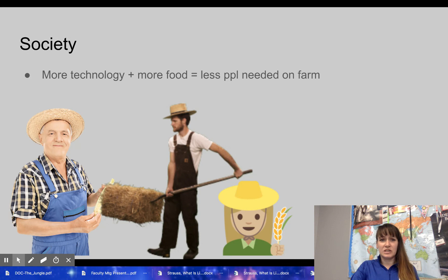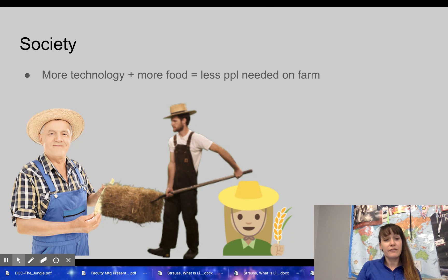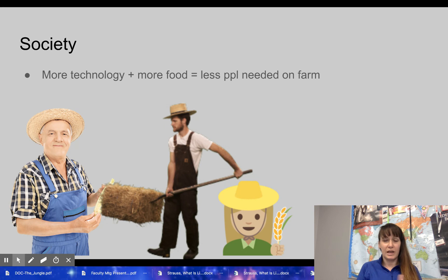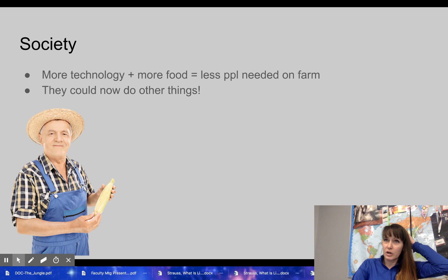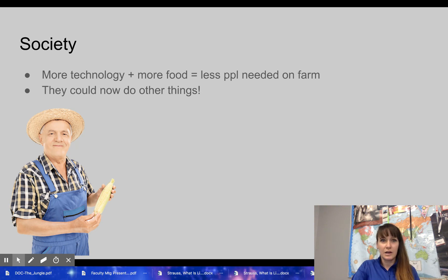These changes had societal effects. With new technologies like the seed drill, more food was produced but fewer people were needed on the farm. You no longer needed people to plant or harvest by hand — machines were replicating some of that work. So you needed fewer farmers. These people could now do other things: be artisans, work in factories, and so on. They still had to make a living, just not necessarily on the farm.